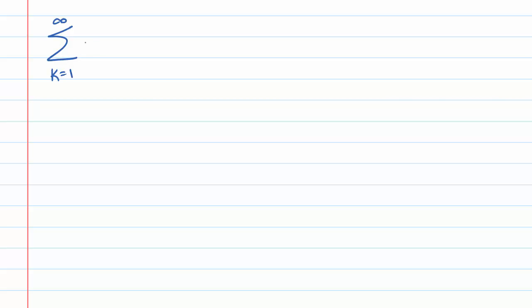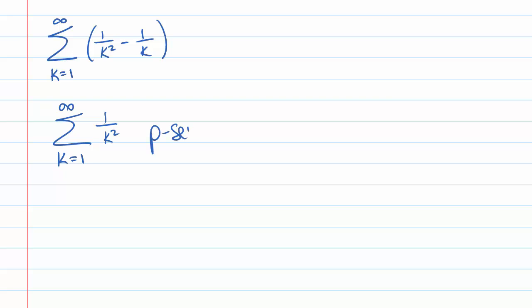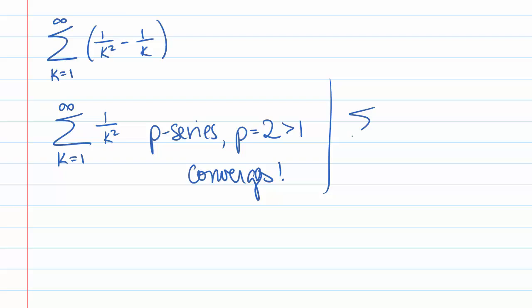Let's try another example: the sum k goes from 1 to infinity of 1 over k squared minus 1 over k. We want to look at each individual series. The sum k goes from 1 to infinity of 1 over k squared is a p-series with p equals 2, which is greater than 1, so it converges. But the sum k goes from 1 to infinity of 1 over k is the harmonic series, so it diverges. So we can't use our splitting property.